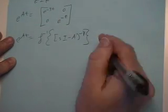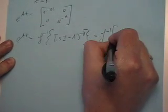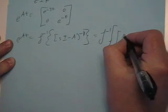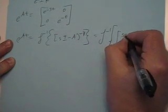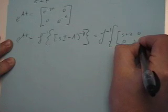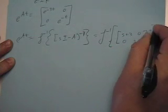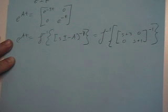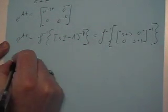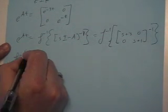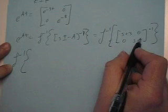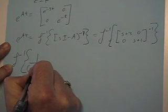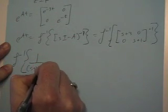So for our case, (sI - A) is the matrix with (s+3), 0, 0, (s+1). That's the matrix we want to invert and then take the inverse Laplace transform. Taking the inverse of a two-by-two matrix means dividing by the determinant (s+3)(s+1), and then finding the adjoint matrix.